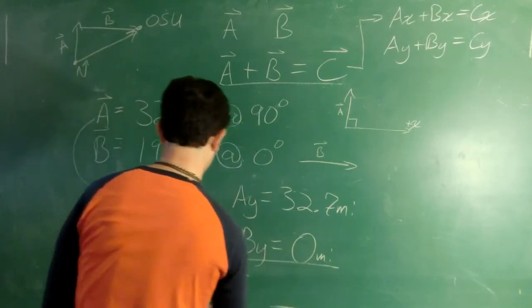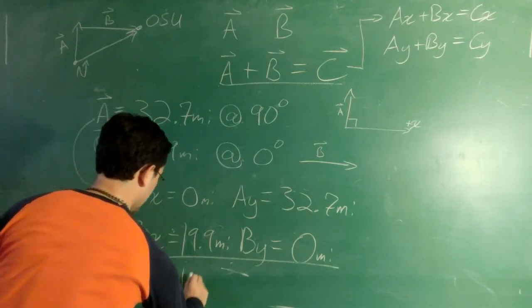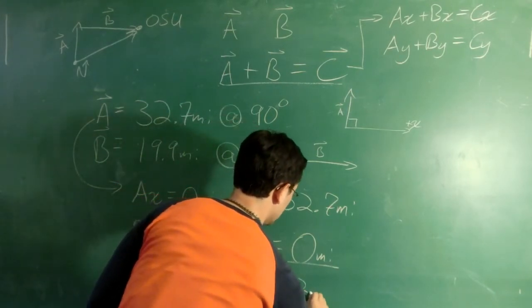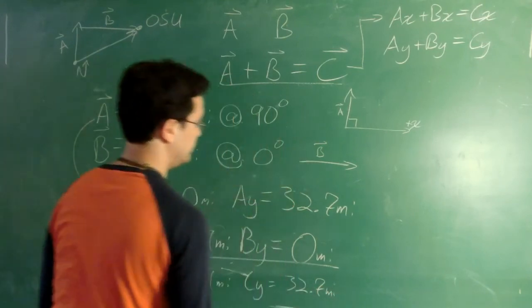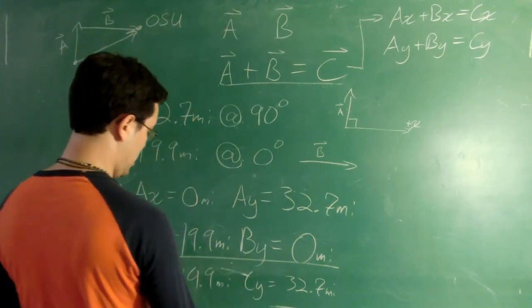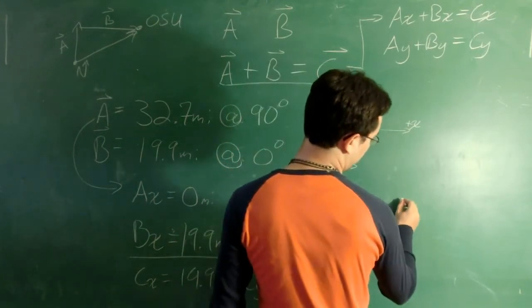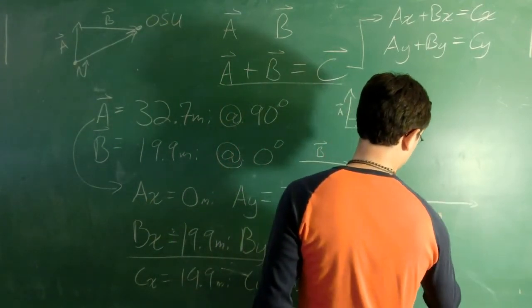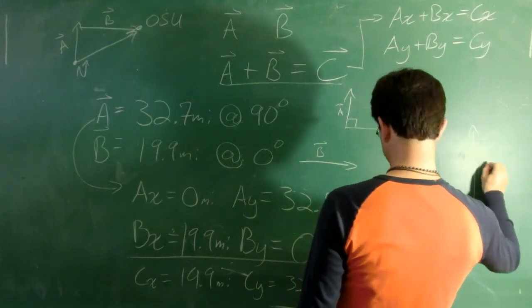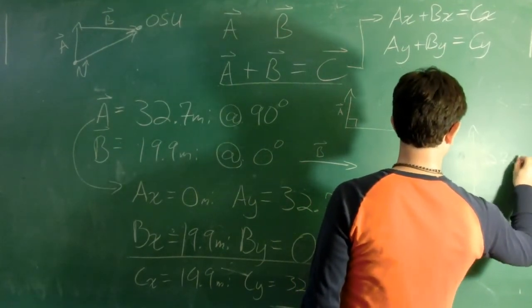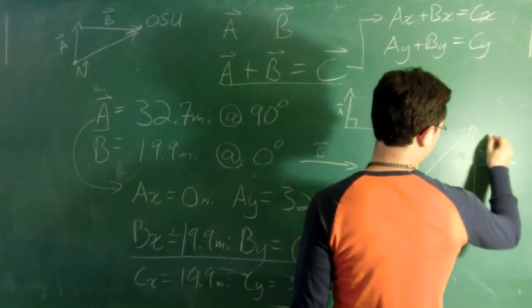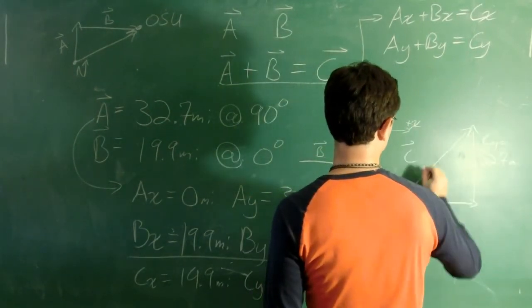Well, when I add these together, I end up that C of x equals 19.9 miles. And C of y equals 32.7 miles. Now, we know our components of C. So we take one final step. We know that our x component of C, I'm going to draw it over here, is positive 19.9 miles. And our y component is 32.7 miles. Also positive. And so our resultant vector, this is our C sub x, our x component. And this is our C sub y, our y component. And so our total vector here, C,